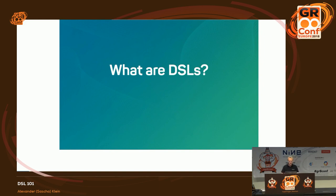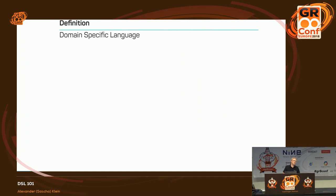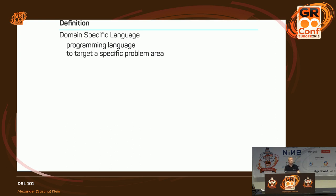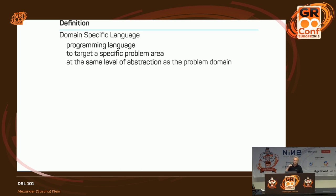So basically, what are DSLs? DSL is an abbreviation for domain-specific language. Apparently we have something to do with a language — a programming language. Although it might look a little different, it is in the end a programming language, but one that targets a specific problem area. It's not a general purpose language like Groovy, Java, or Kotlin. It focuses directly on a specific problem, and tries to have the same level of abstraction as the problem.